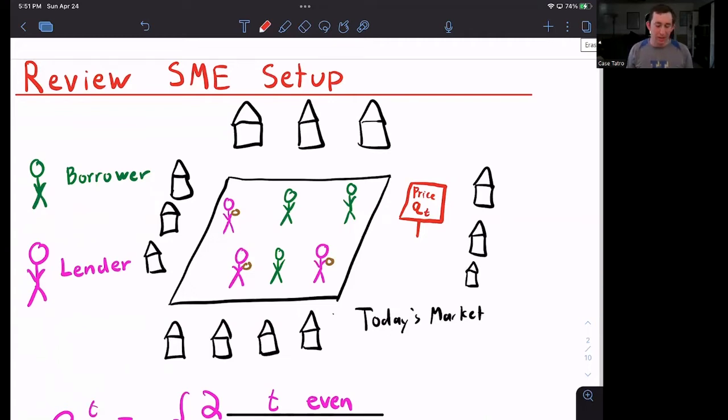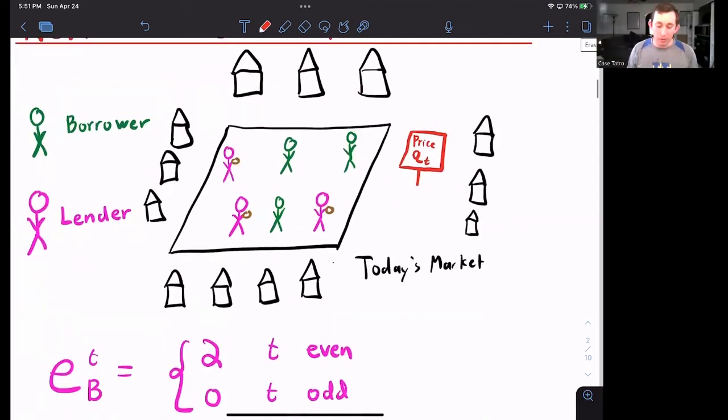You've got people who are willing to lend coconuts. These people are in pink. And you've got people who are willing to borrow coconuts because maybe their endowment at this period is pretty low and we're trying to smooth consumption. So those borrowers are in green. And then tomorrow, those borrowers will pay back the coconut to the lender. So here's the market.